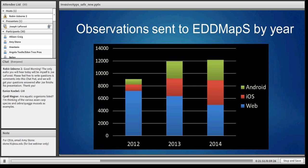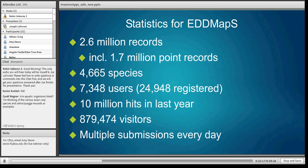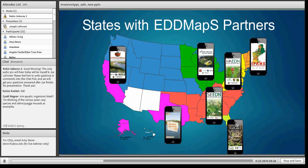So far this approach has been pretty successful. We continue to get additional reports — this graphic is actually old and doesn't include the tail end of 2014, but we are getting a significant number of reports. We've also brought in bulk data from a variety of partners, which has helped the system grow. We currently have 2.6 million occurrence records in the system with 1.7 million point records, covering about 4,665 species, with multiple submissions per day.